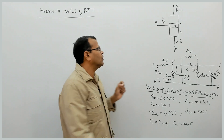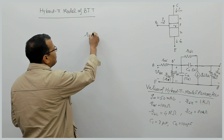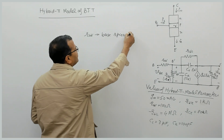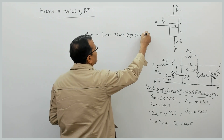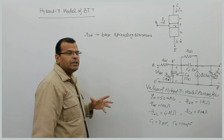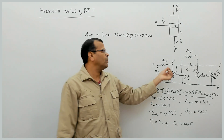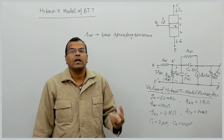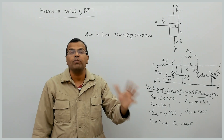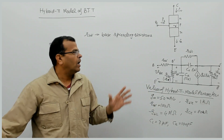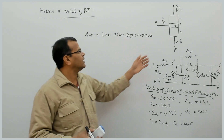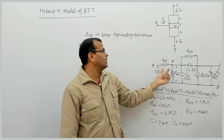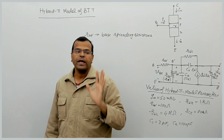We consider a resistance between the external terminal and the internal node B'. That resistance is RBB'. RBB' is called the base spreading resistance. This is not a physical resistance that can be measured, because we cannot access this internal point using any instrument, but we can determine its value mathematically.